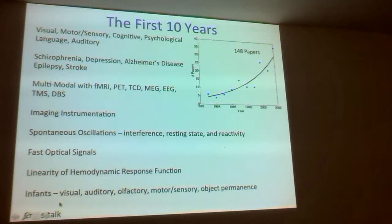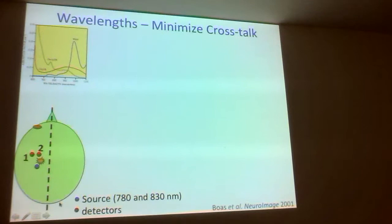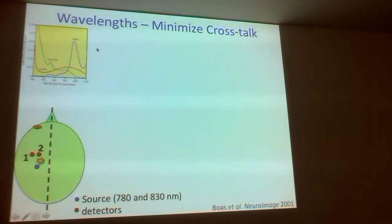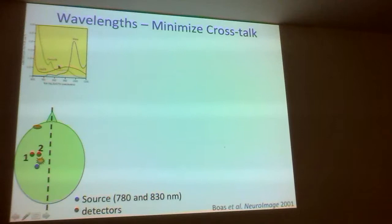One big change in the first 10 years was actually the choice of wavelengths. In the first 10 years, everyone was using 780 nanometers with 830 nanometers — the idea being the isobestic point at 800 nanometers, with one wavelength shorter for deoxyhemoglobin sensitivity and one longer for oxyhemoglobin. But when converting from optical density changes to concentration changes, you had to make assumptions about the differential path length factor, and any small errors would be amplified because the spectral differences were not that large.